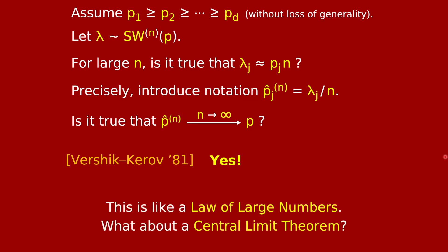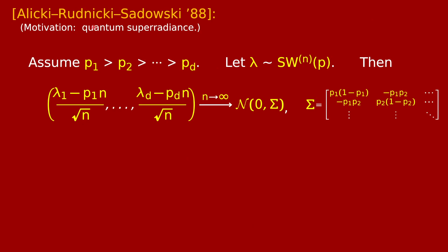This is just a limiting statement, kind of like a law of large numbers for the row lengths of this random Young diagram. A more refined thing to ask about would be whether there's in fact a central limit theorem. This question was studied way back in 1988 by physicists Alicki, Rudnicki, and Sadowski. They were motivated by quantum super radiance and proved this very impressive-looking central limit theorem. Assume p1 is greater than p2 is greater than dot dot dot pd. Let lambda be this random Young diagram. They showed that as n goes to infinity, this vector of d numbers lambda j minus pj n over root n tends to a multivariate Gaussian distribution with mean zero and covariance matrix sigma.